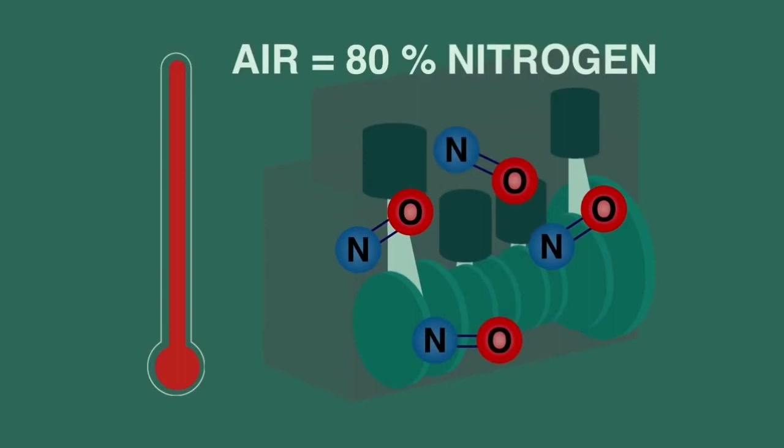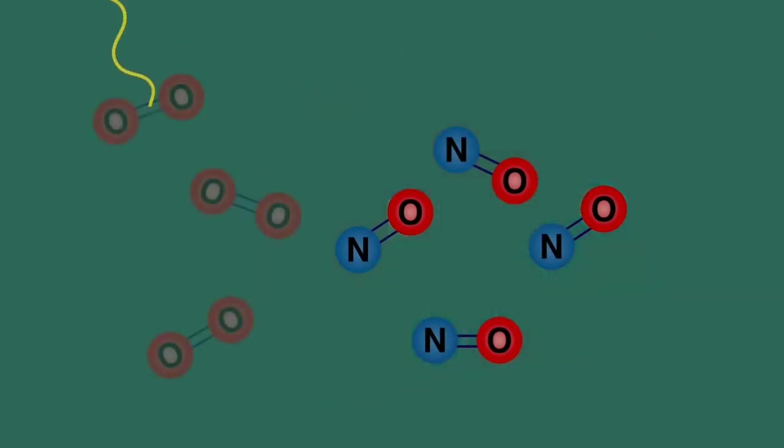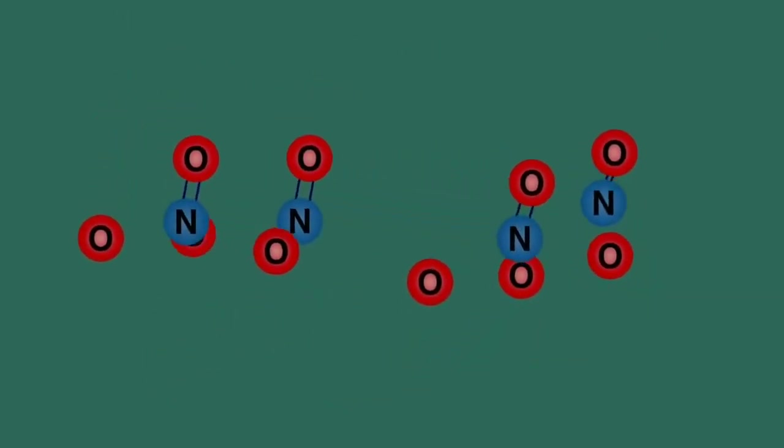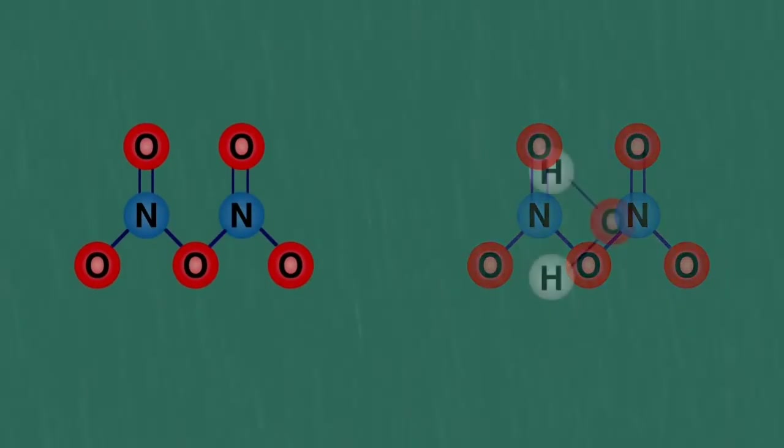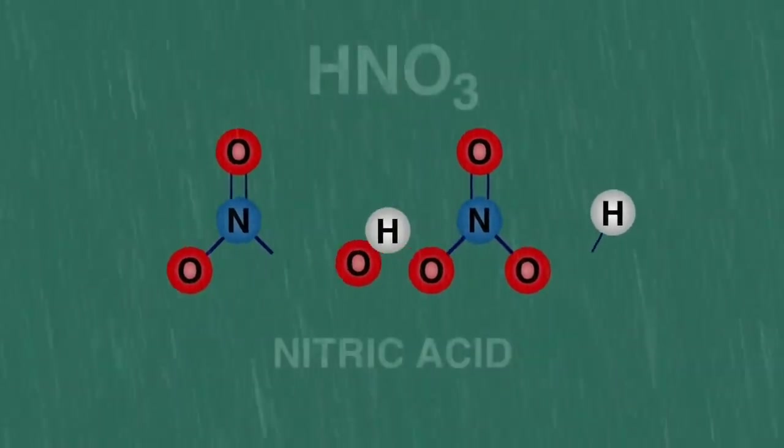Once the oxides of nitrogen are in the air, they react with more oxygen, just like we saw with sulfur dioxide, and dissolve in the rainwater to form nitric acid.